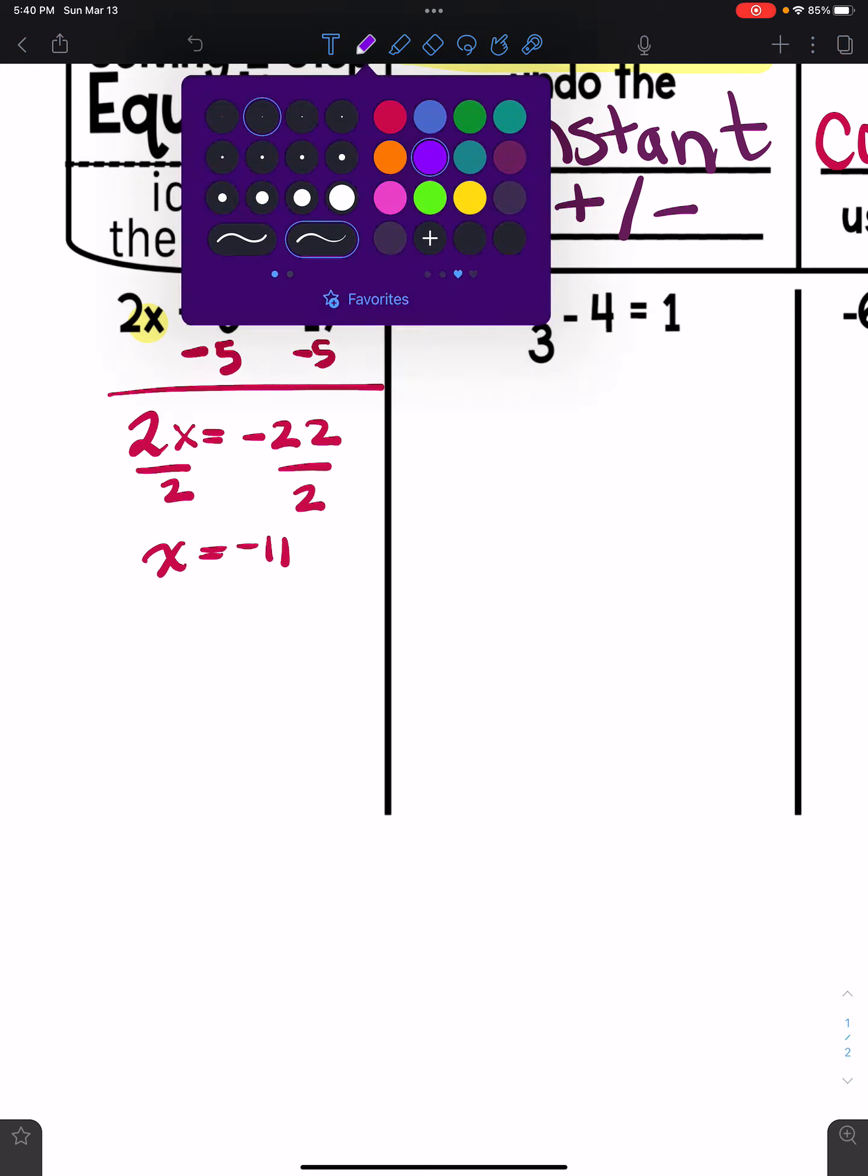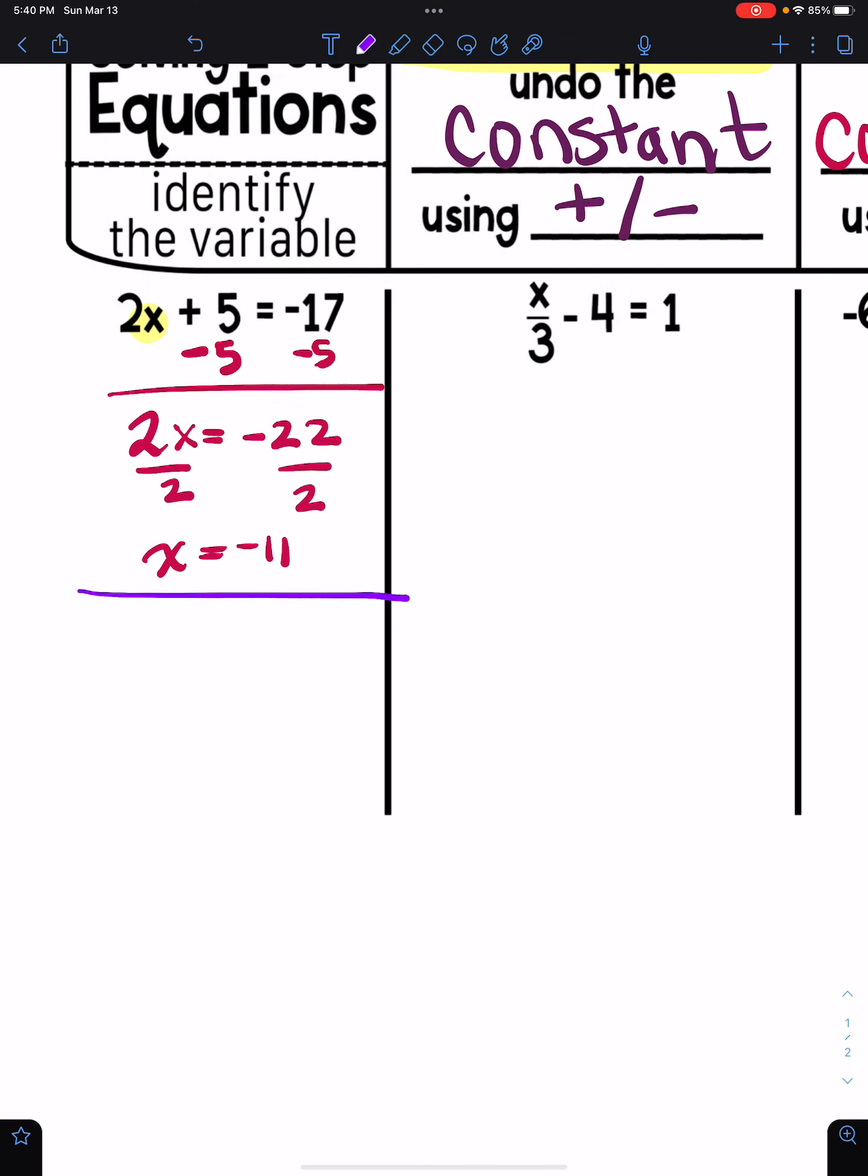Remember what we talked about with one-step equations, you can check your work. Two times negative 11 is in fact negative 22. So I'm positive I got this one right because my answer makes the equation true.